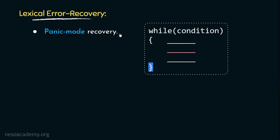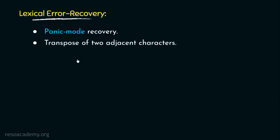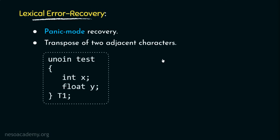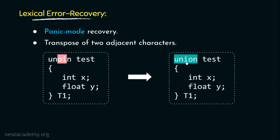Since everything is ignored until the delimiter, this strategy is called panic mode recovery. The error handler can also recover lexical errors by transposing two adjacent characters. For instance, consider a code segment where two characters are in wrong positions — if the character 'i' were in 'o's place and 'o' in 'i's place, it would form the valid keyword token 'union'. The error handler will transpose these two adjacent characters to form the correct keyword token 'union'.